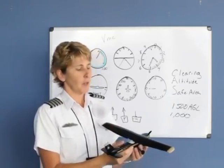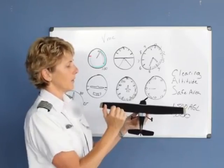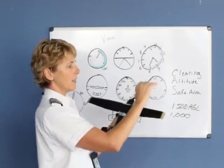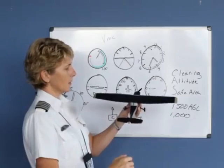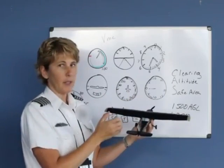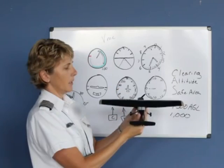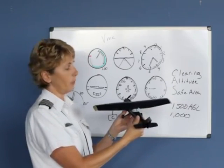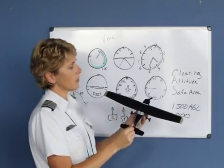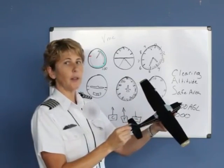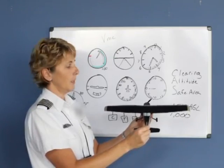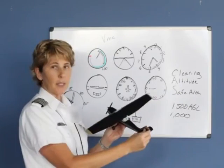Because we're pitched up with power, we're going to have p-factor. Remember that p-factor occurs when we pitch the aircraft up and the descending blade takes a bigger bite out of the air. So even though we're not climbing, being pitched up with power means the airplane will want to yaw to the left. You'll need to apply right rudder to hold the plane straight. For a turn to the right, extra right rudder is required to maintain coordination. For a turn to the left, simply releasing some of that right rudder and banking the ailerons slightly is enough, since the plane already wants to yaw left.